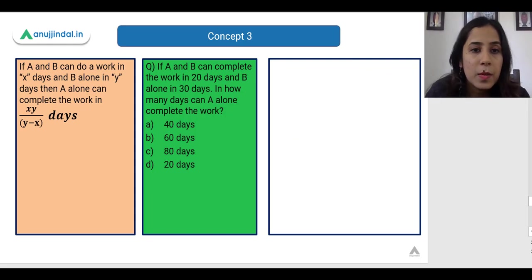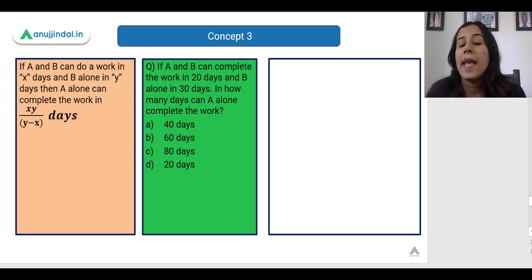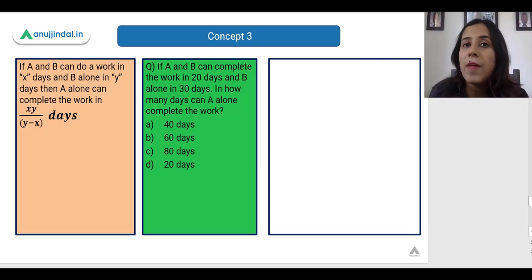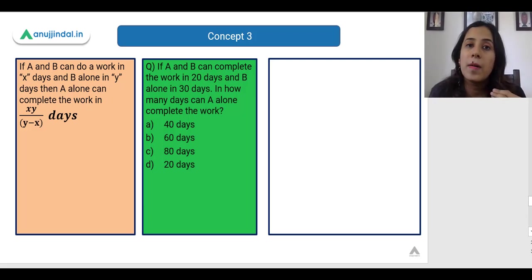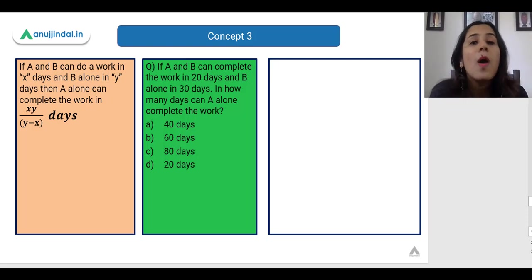Next shortcut: if A and B together can do a work in X days and B alone can do it in Y days, then A alone can complete the work in (X × Y) / (Y − X) days. Here we are given the time taken by A and B together, and we need to find the time taken by A alone. We multiply the combined time by B's individual time and divide by the difference between those two times.